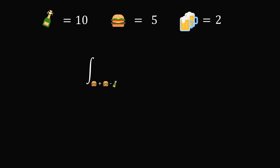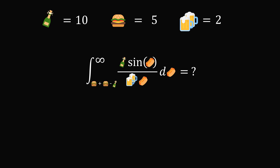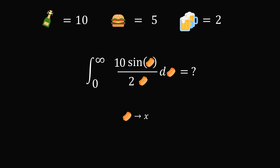We'll now substitute these values into the integral. So we have the integral from burger plus burger minus bottle to infinity of bottle multiplied by sine hotdog divided by 2 beers multiplied by hotdog, dhotdog. Burger plus burger minus bottle is equal to 5 plus 5 minus 10, which is equal to 0 — that's the lower limit. Then bottle is equal to 10, and 2 beers is equal to 2. Hotdog is a placeholder variable, so we can replace it by x. So we have sine x, 2x, and dx.